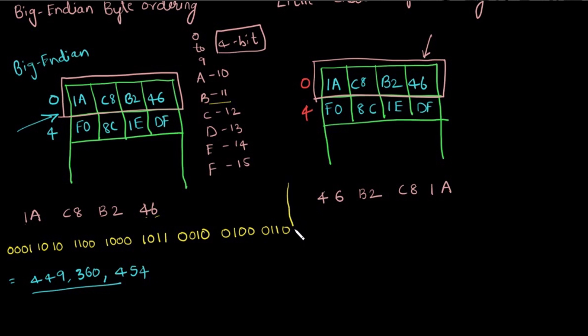Now, what is the value of 4? What is the value of 4 in 4 bit binary number? It is 0100, 6 is 0110, B is 11. So, the value is 1011, 0010, the value of C is 12 so 1100, the value of 8 is 1000, 1 is 0001, and A is 10 which is nothing but 1010. I have also calculated this value which is 1186121754.